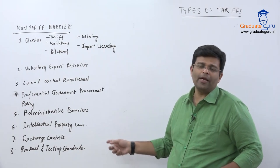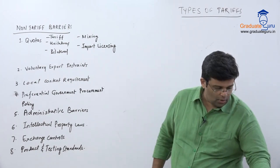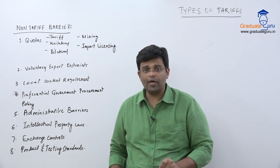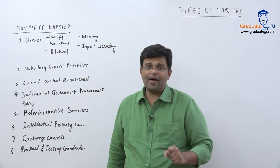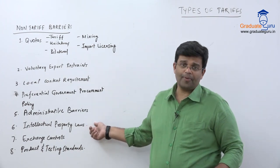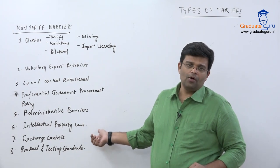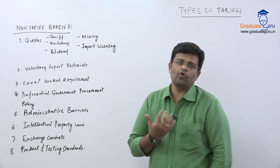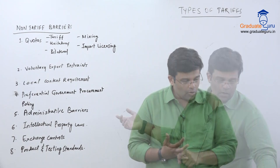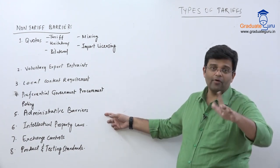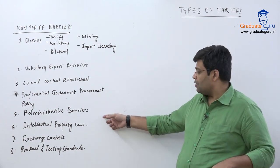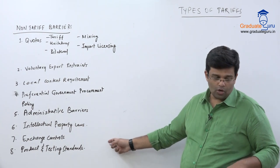Administrative barriers are designed to make the import process lengthy. They include licensing requirements, legal requirements, procedural requirements, and channeling requirements — for example, you can only buy from a particular agency, you need to take permission from a specific authority. This increases the time required so much that the importer may simply give up and procure locally. Intellectual property laws and copyright laws are also important non-tariff barriers, used extensively by the US and European countries.